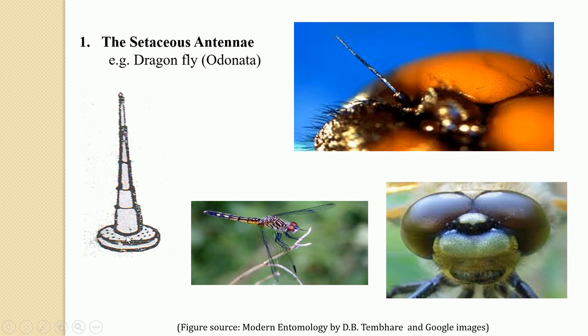The basal segment is the antennal socket, this one is the scape, then the second one is the pedicel, and the remaining one is the flagellum. In the case of setaceous antennae, there is a gradual reduction in the size of the segments, and due to this reduction the whole antennae looks like a bristle. In this diagram you can see the antennae has fewer antennal segments particularly in the flagellum, and the whole antennae looks like a bristle — this is referred to as the setaceous antennae.